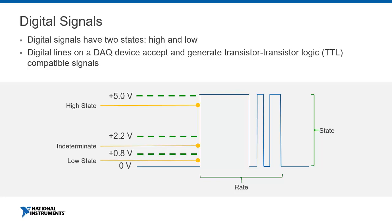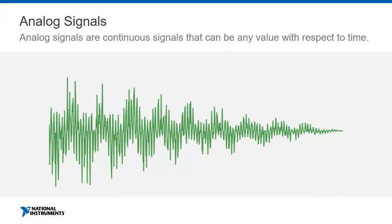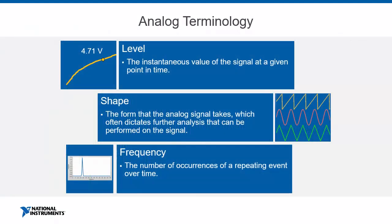Next, let's talk about analog signals. Analog signals are continuous signals that can be any value with respect to time. Unlike a digital signal, which only contains two possible states, the physical quantities can vary widely, as you can see in this graph. When measuring analog signals, there are three quantities that may be useful: we can measure the level, the shape, or the frequency of the signal. Measuring the level of an analog signal is similar to measuring the state of a digital signal, except that an analog signal can be at any value at any given point in time.